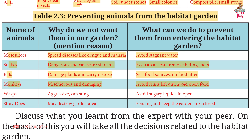Wasps: aggressive and can sting; prevent by avoiding sugary liquids in the open. Stray dogs: may destroy garden area; use fencing and keep the garden area closed.